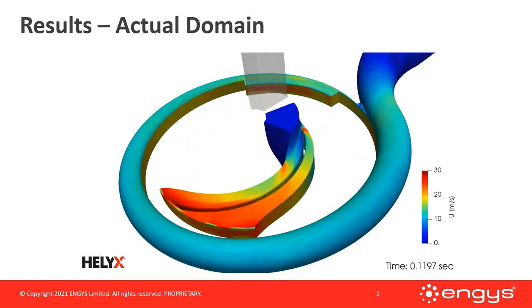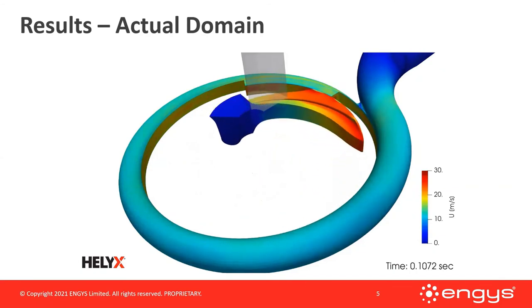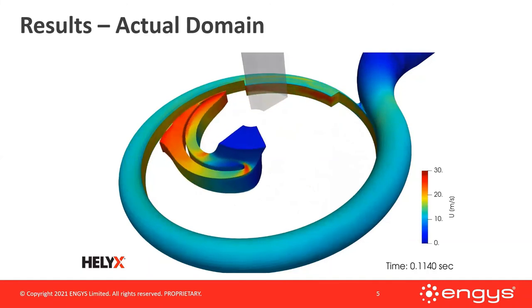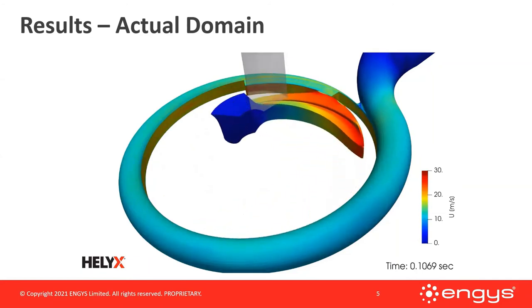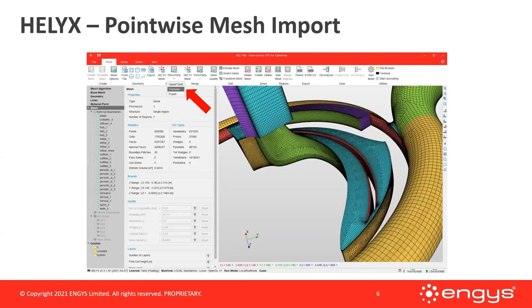For the mesh we teamed up with Pointwise, now Cadence, who created a Pointwise mesh from the CFturbo input deck. This is imported into the Helix graphical user interface. The mesh uses a T-Rex approach — a tetrahedral core mesh combined with isotropic near-wall layers to resolve the boundary flow. The overall mesh size is about 1.8 million cells. The case was also run with our version of snappyHexMesh.